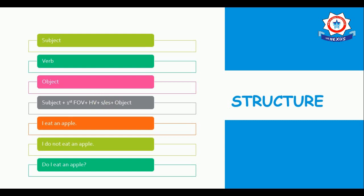Now, here you can see the subject — the person who is performing the action. For example, 'I' — I am performing the action. First form of verb: the work is 'eat', and I have to put the first form of that verb, which is 'eat'. The second form is 'ate' and the third is 'eaten'. So I have placed the first form here: 'I eat an apple.' Here, 'I' is the subject, 'eat' is the first form of verb, and 'apple' is the object.